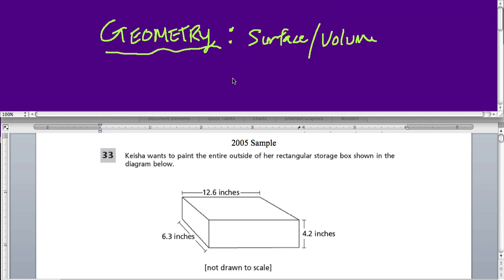When they talk about geometry on the New York State 7th grade test, they're talking about either the Pythagorean theorem, something to do with circles, or surface area and volume of a three-dimensional shape. Let's focus on surface area because in this question right here, we're talking about surface area. Let's read the question. Here's Keisha, who wants to paint the entire outside of her rectangular storage box shown in the diagram below.